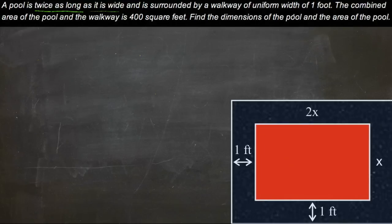And it's surrounded by a walkway that's a uniform width of one foot, so it's one foot wide all the way around. The combined area of the pool and the walkway is 400 square feet. And we need to find the dimensions of just the pool and the area of just the pool.